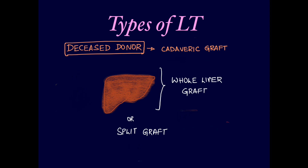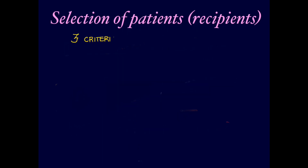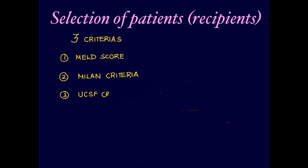How do we select recipients eligible to receive a liver transplant? There are three criteria: first is the MELD score, second is the Milan criteria, and third is the UCSF criteria. Milan and UCSF are modifications of each other, so either can be used.